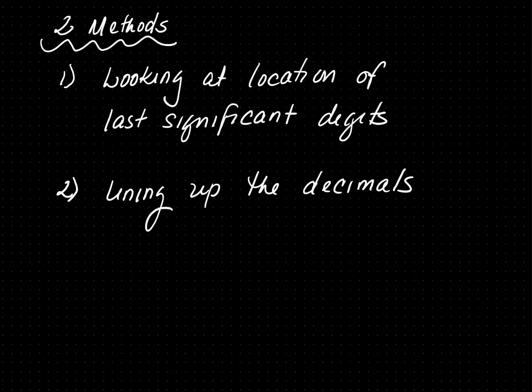I'm going to teach you two methods to add and subtract significant digits. The first method is looking at the location of the last significant digit and rounding. The second method is lining up the decimal like you did in elementary school and rounding.